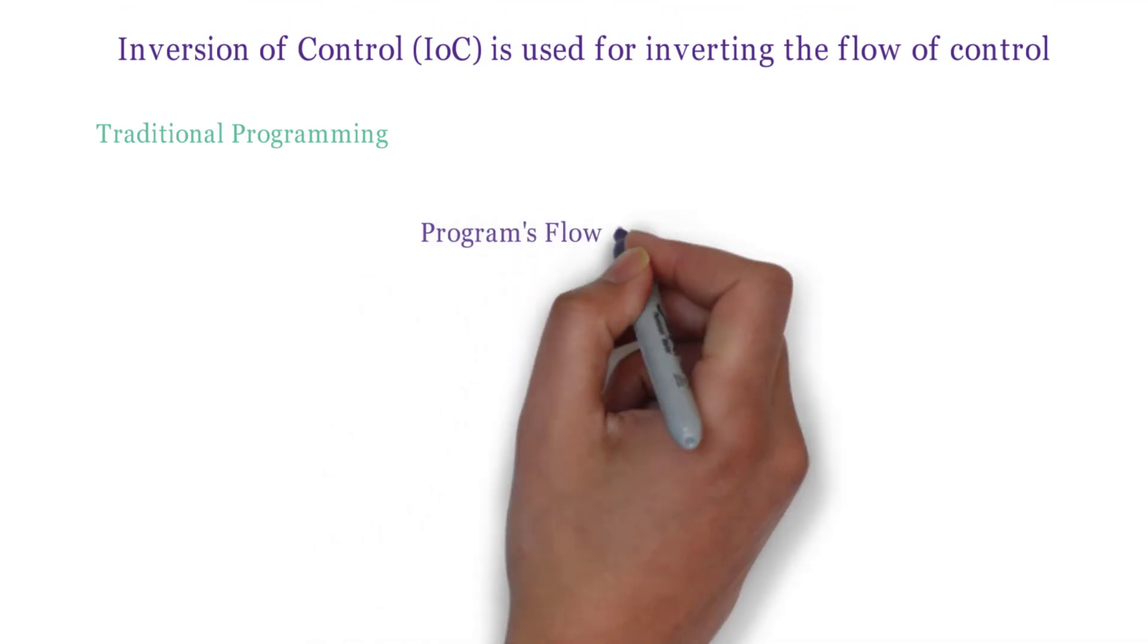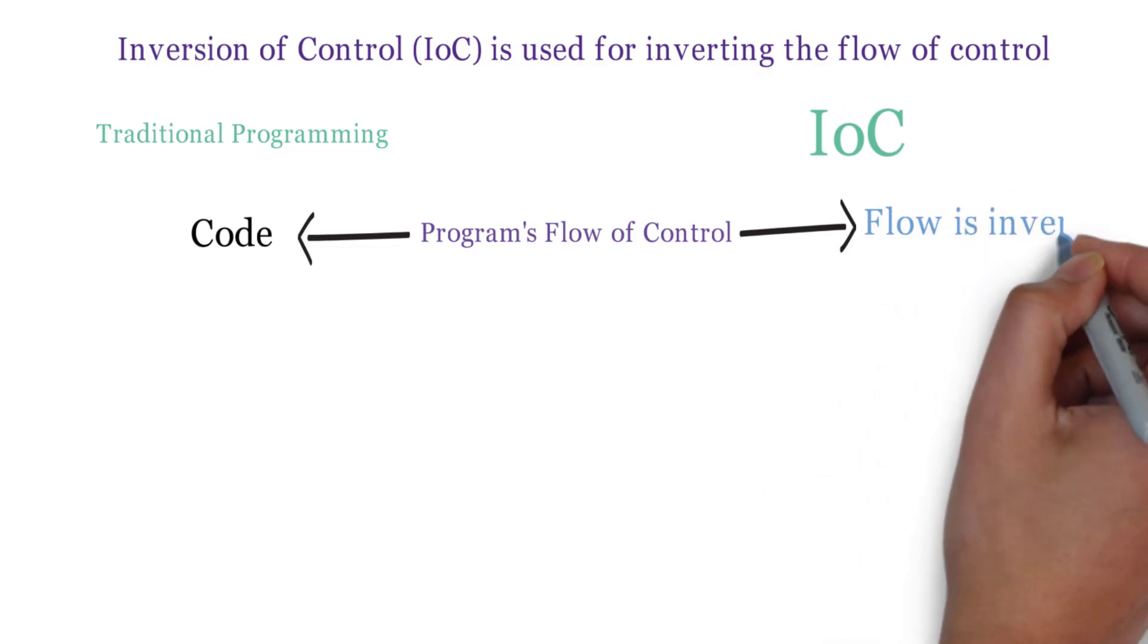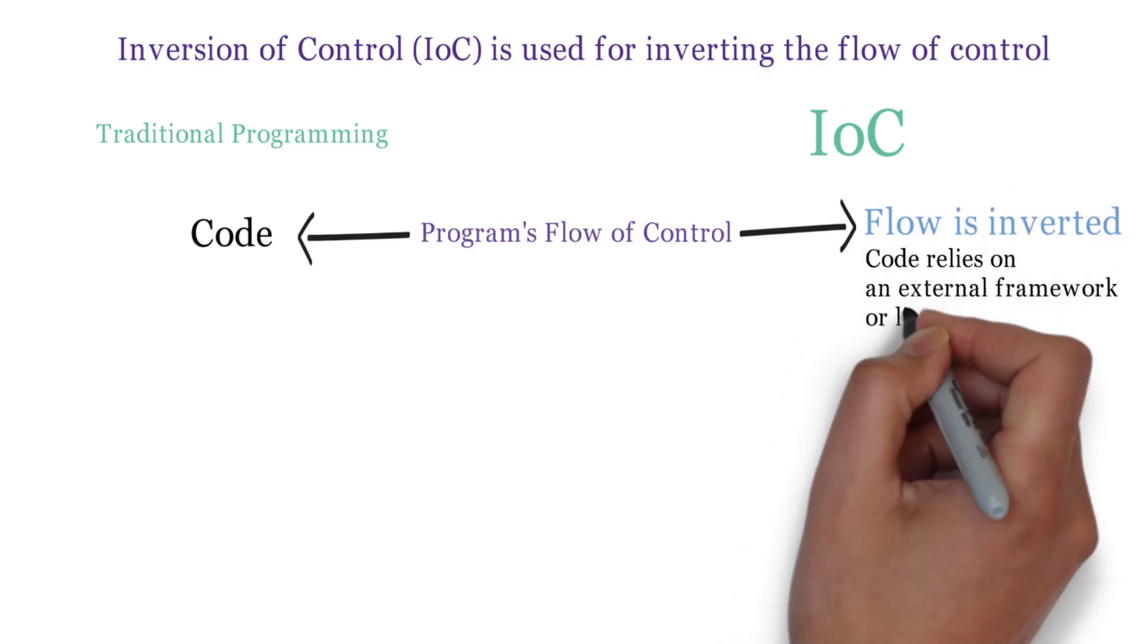Inversion of control is used for inverting the flow of control in an application. In traditional programming, a program's flow of control is determined by code itself. However, in IOC, the control flow is inverted and code relies on an external framework or libraries to manage the flow of control.